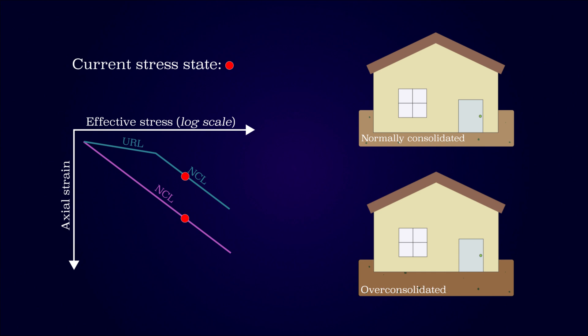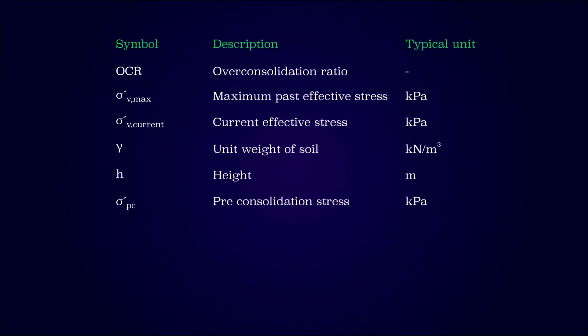Understanding the overconsolidation ratio of soil is crucial to understand the behavior of soil, since strength and stiffness parameters are greatly affected by the degree of overconsolidation. This concludes the video. The table presented shows the variables used and their general units.